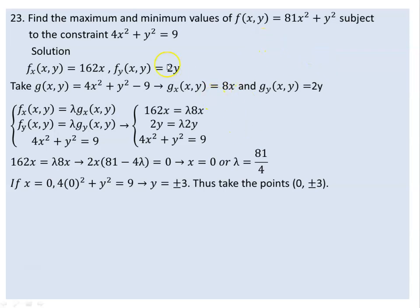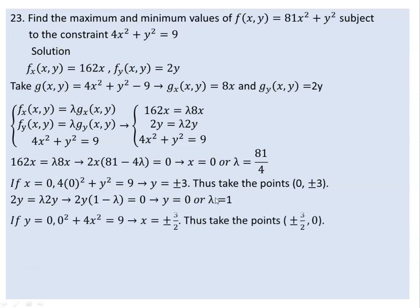Considering the case where x equals 0: substituting into the constraint 4(0) plus y squared equals 9 gives y equals plus or minus 3. So the points (0, plus or minus 3) are candidates. From the second equation 2y equals lambda times 2y, giving 1 minus lambda equals 0. When y equals 0, the constraint becomes 4x squared equals 9, so x squared equals 9 over 4 and x equals plus or minus 3 over 2. So (plus or minus 3/2, 0) are also candidate points.